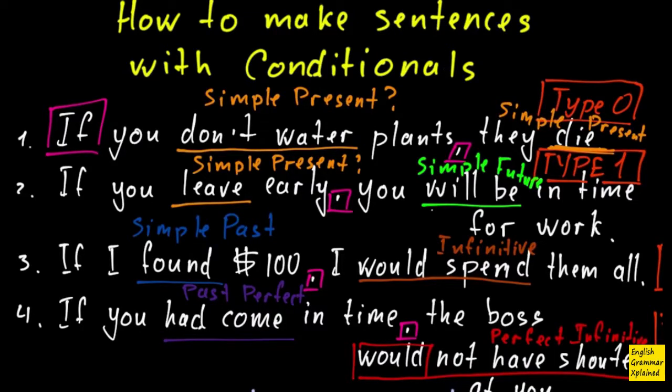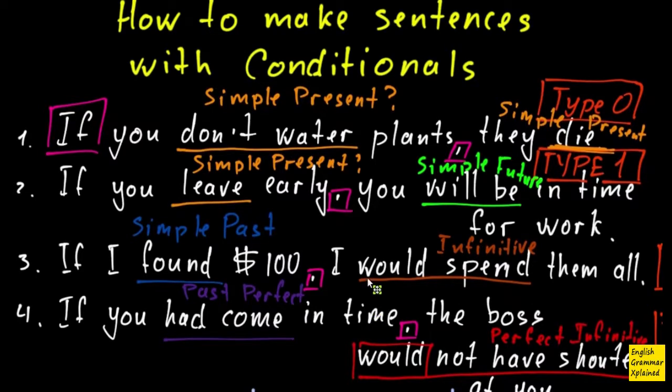What's up, guys? This is English Grammar Explained, and this time I continue to talk about conditionals. How to make sentences with conditionals. Real condition, unreal condition, and so on. And that's part two. The link to part one is in the video description.